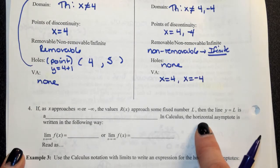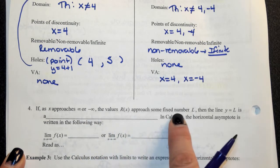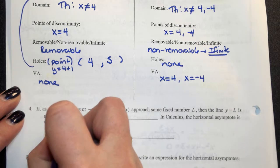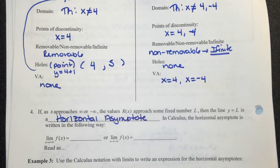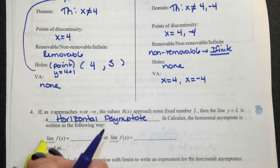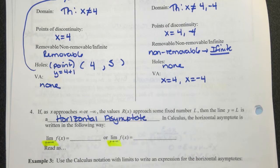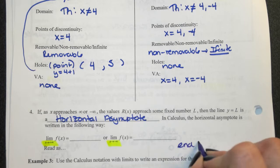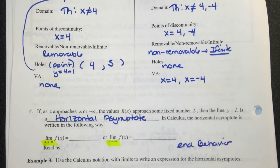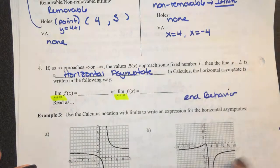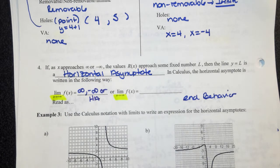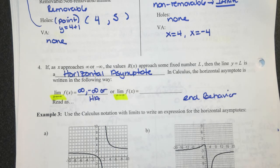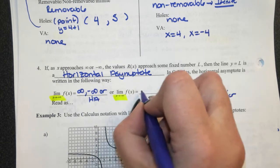If x approaches positive or negative infinity and approaches a fixed number, we have a horizontal asymptote. From the last unit, we talked about the horizontal asymptote as the end behavior. As x approaches positive infinity or x approaches negative infinity, one of three things could happen: positive infinity, negative infinity, or the value of the horizontal asymptote.